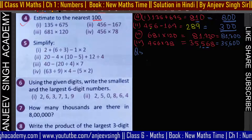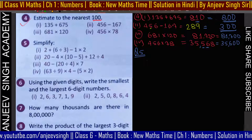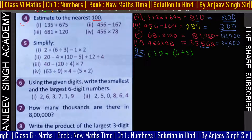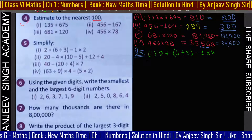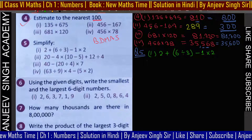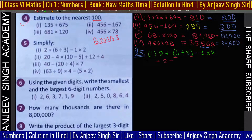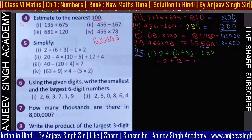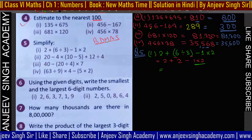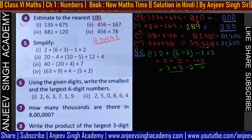Question number 5: simplification करना है। पहला question: 2 plus 6 ÷ 3 minus 1 × 2। BODMAS rules याद रखें: Bracket, Division, Multiplication, Addition, Subtraction। Bracket का काम सबसे पहले: 6 ÷ 3 = 2। तो हो गया 2 plus 2 minus 1 × 2। अब multiplication पहले: 2 plus 2 minus 2।